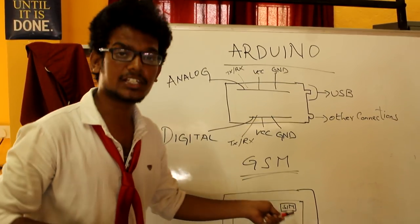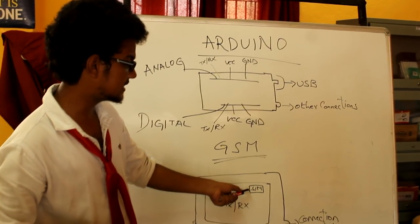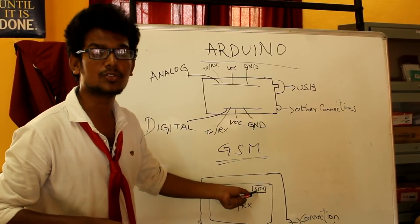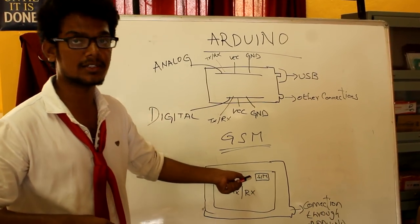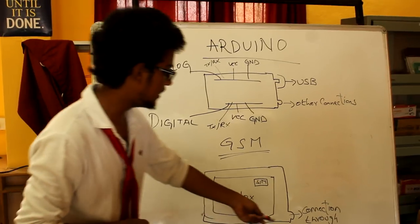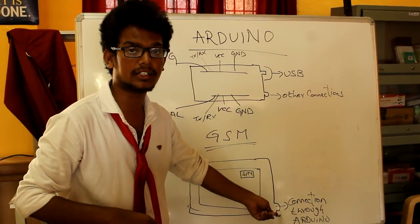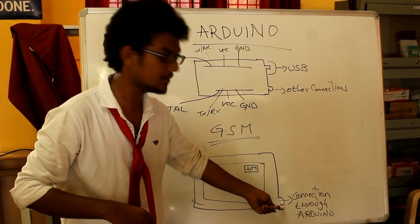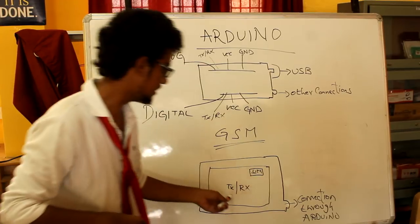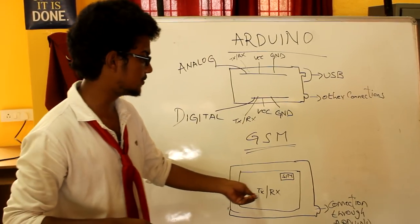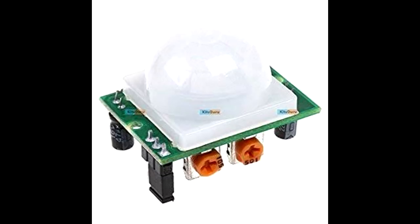GSM plays a major role in our project. We insert a SIM into this GSM module so that we can receive and send SMS alerts. The Arduino connections can be connected through this GSM. The TX and RX should be connected perfectly so that our project will be successful.